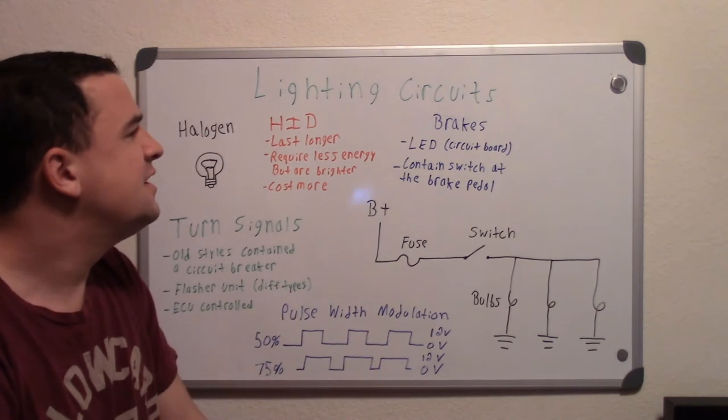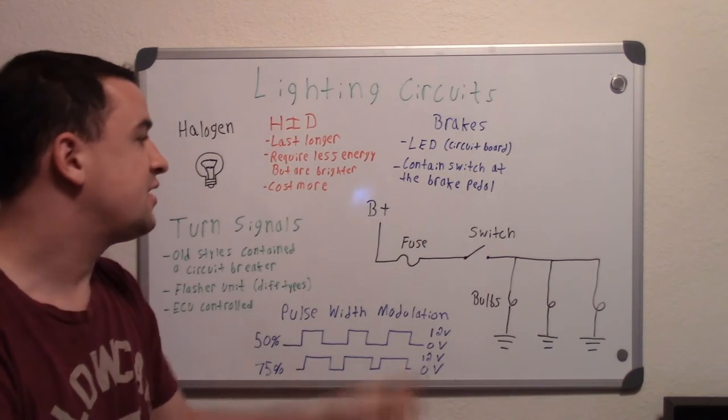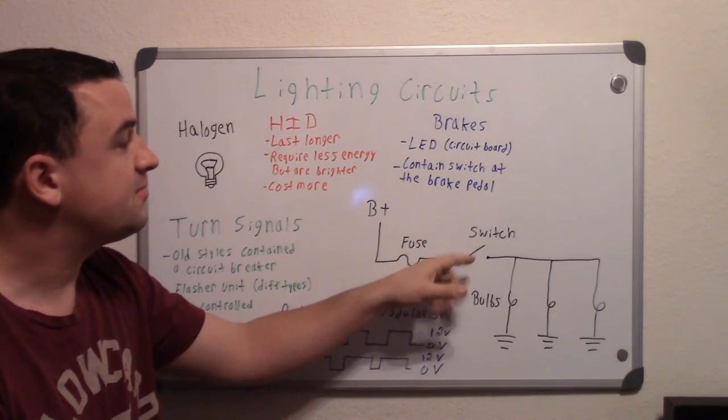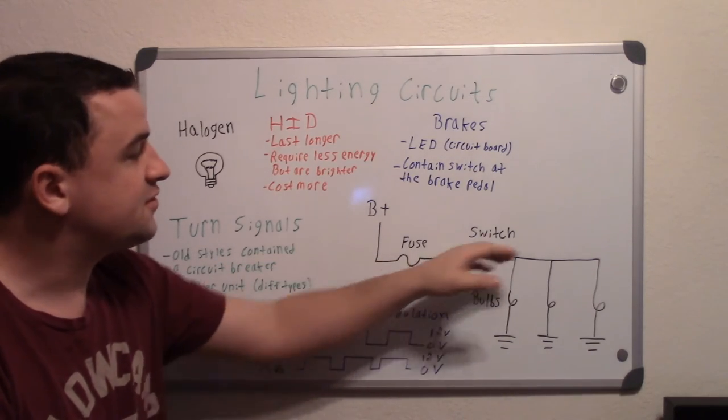In the brake light circuits, it contains a switch at the brake pedal. So that's pretty much like your switch here. When you press on the brake pedal you'll complete the switch and allow the electricity to flow through the circuit and to your bulbs.